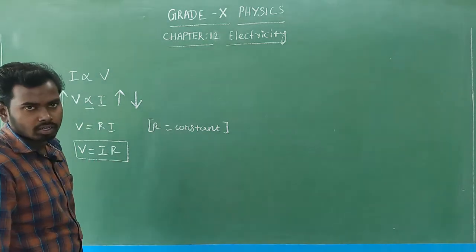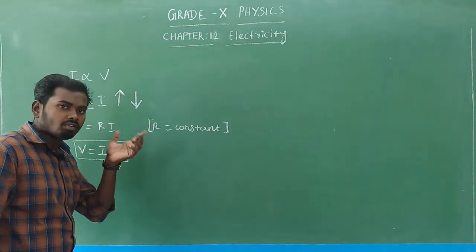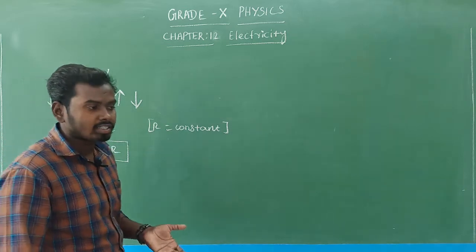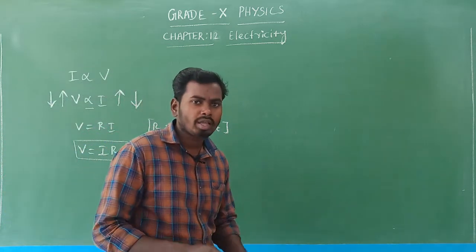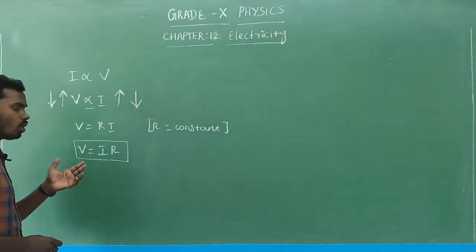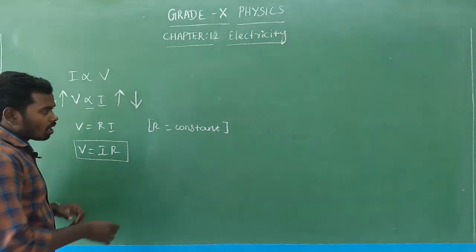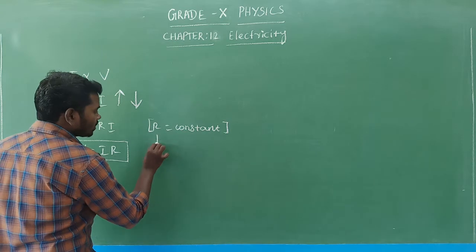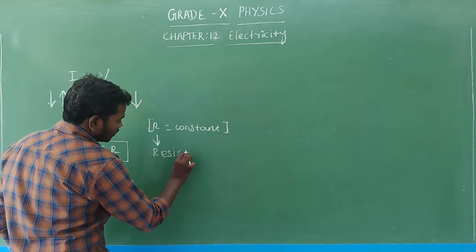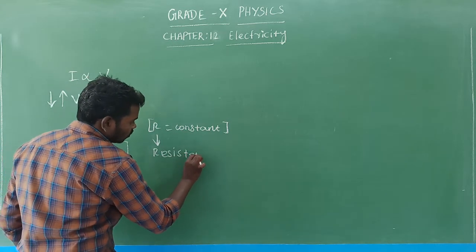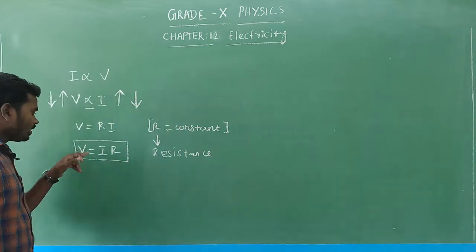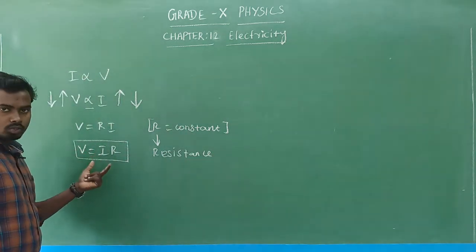V equal to IR — never ever forget this equation, because the full electricity concept is based on Ohm's Law. The constant R is known as resistance.